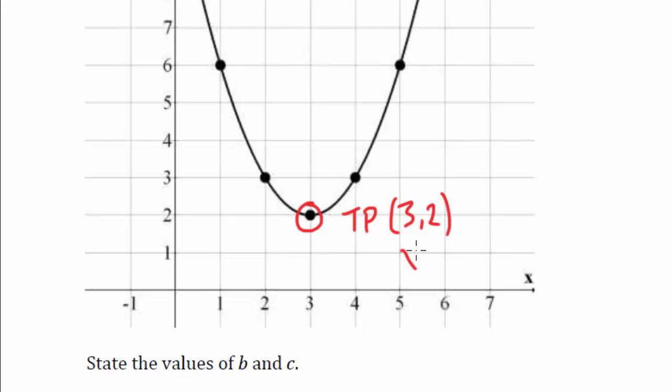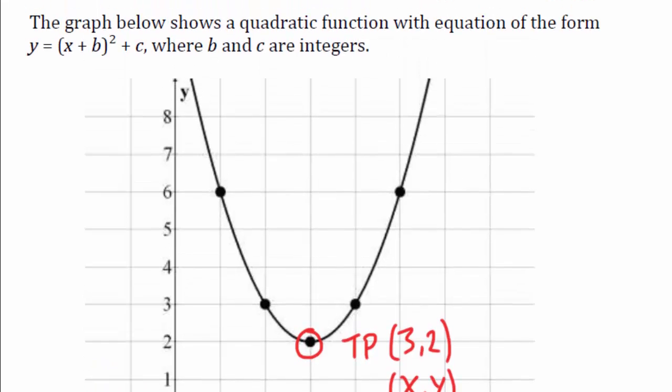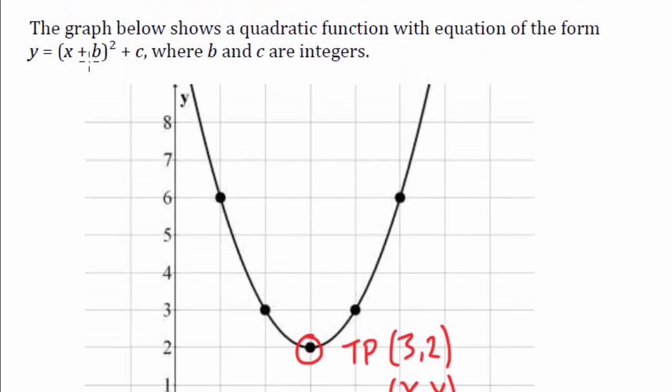Obviously 3 is the x coordinate, y is 2. Now if we look up here, this b and c, what these represent is the turning point.